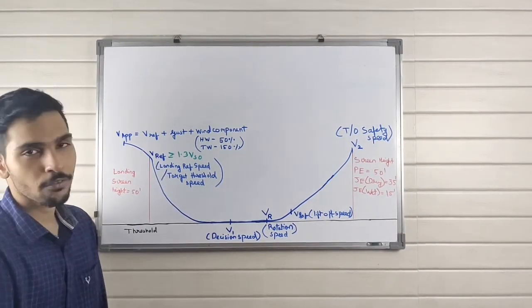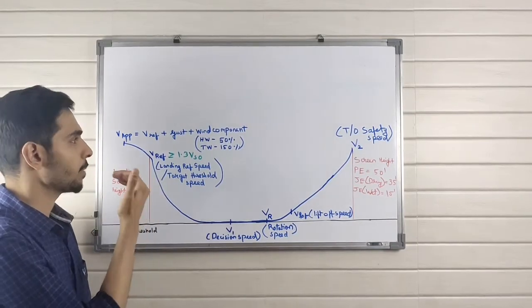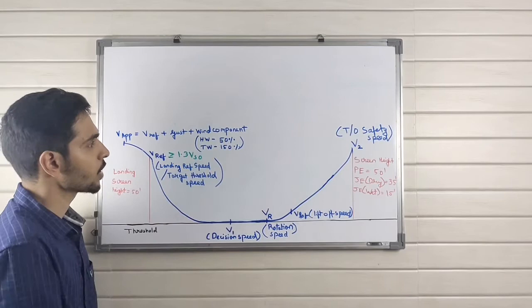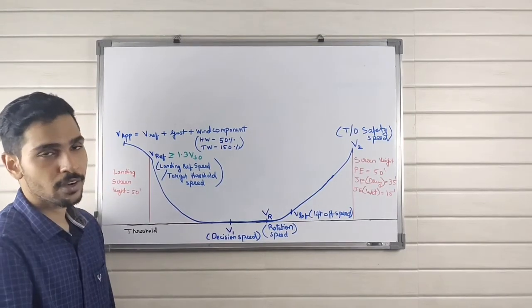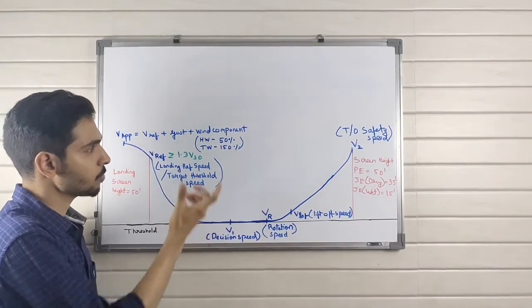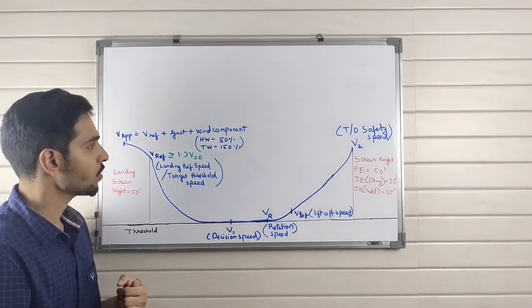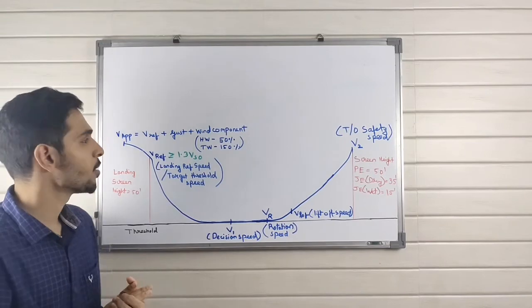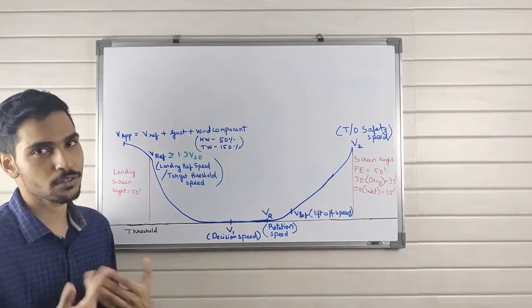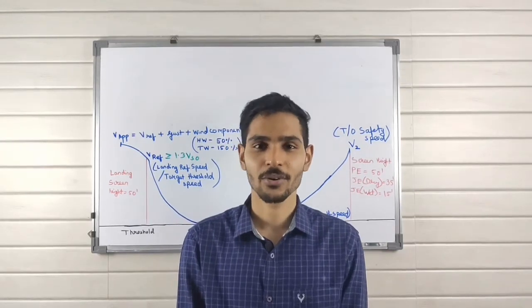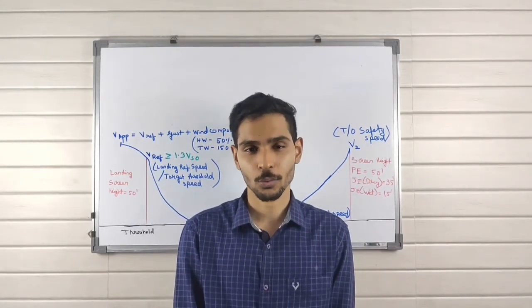This is your V approach speed. It is the sum of your reference speed plus wind and gust components. In case there is a headwind, we'll take only 50% of its value because headwind is beneficial while landing. In case of a tailwind, we'll take 150% of the value because tailwind is not that beneficial for us.